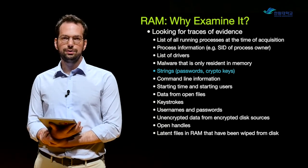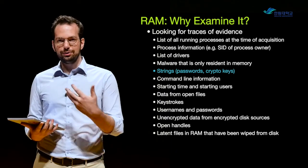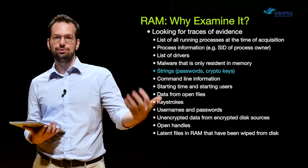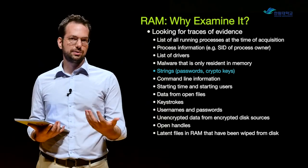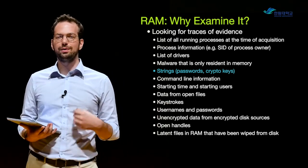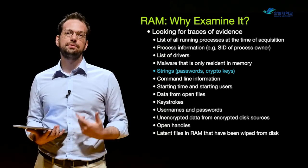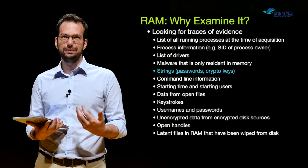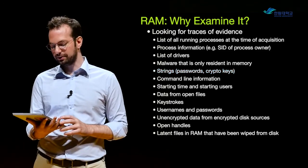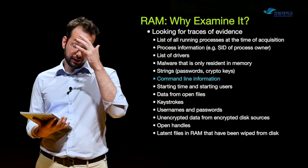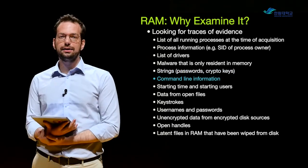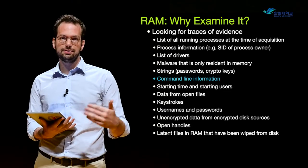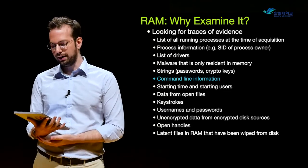Think about your computer: you type in your username and password, and whenever you do that, all of that information has to go to RAM for the computer to work with it. So if we're dealing with a suspect system and we make a copy of memory, we may be able to recover different usernames, passwords, or any kind of hidden information input into fields or boxes. Command line information — if your suspect is using the command line and they clear out their command line history, we can still potentially recover some of the commands that have been run and some of the connections that have been made if we're looking at RAM.